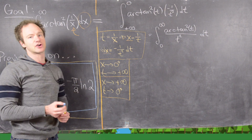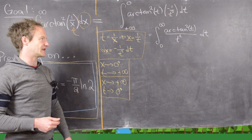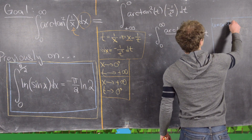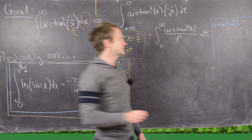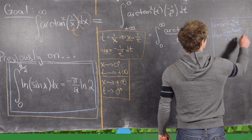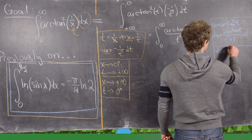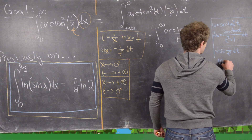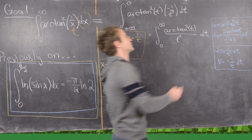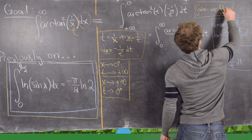From here we'll do an integration by parts. We need to decide what portion of the integrand to differentiate and what to integrate. We let u equal arctan squared of t, so by the chain rule du equals 2 arctan(t) over (t² + 1) dt. Then we let dv equal 1 over t squared dt, which makes v equal minus 1 over t. The integration by parts formula is: integral of u dv equals u times v minus the integral of v du.